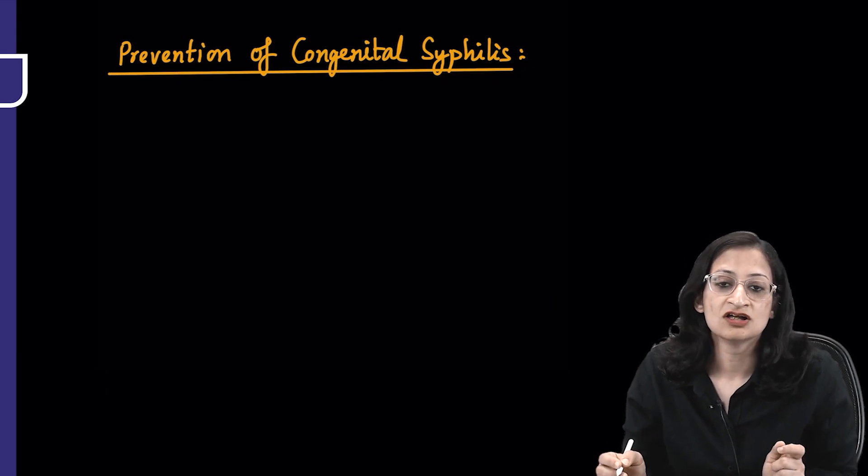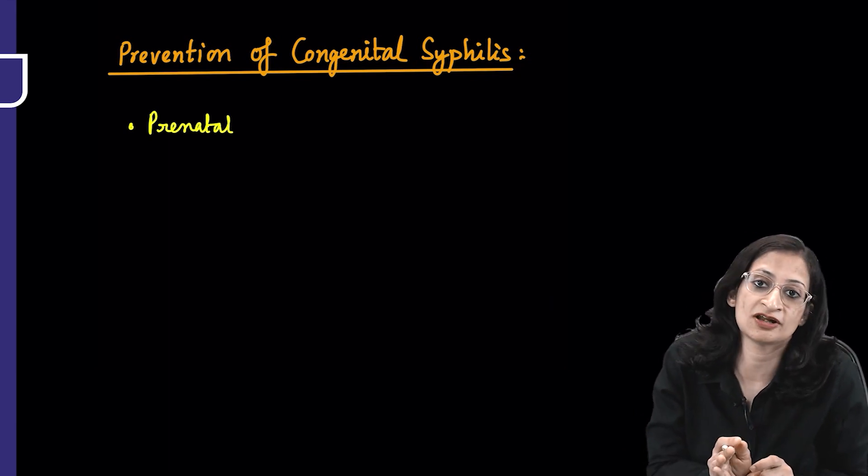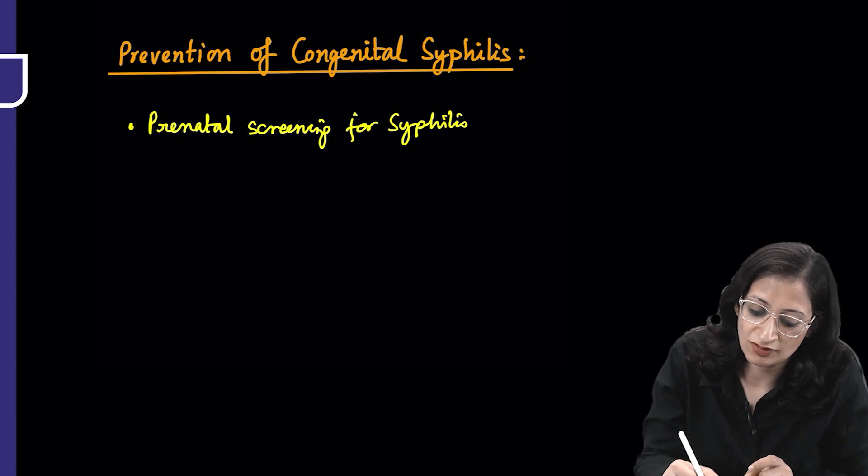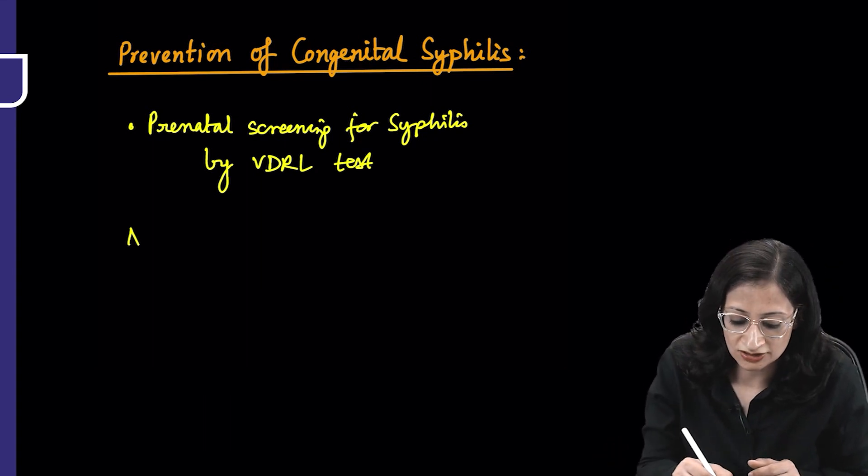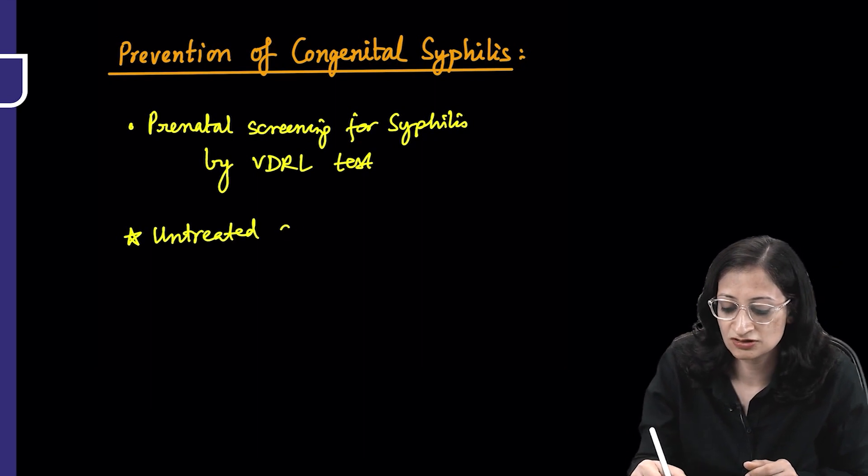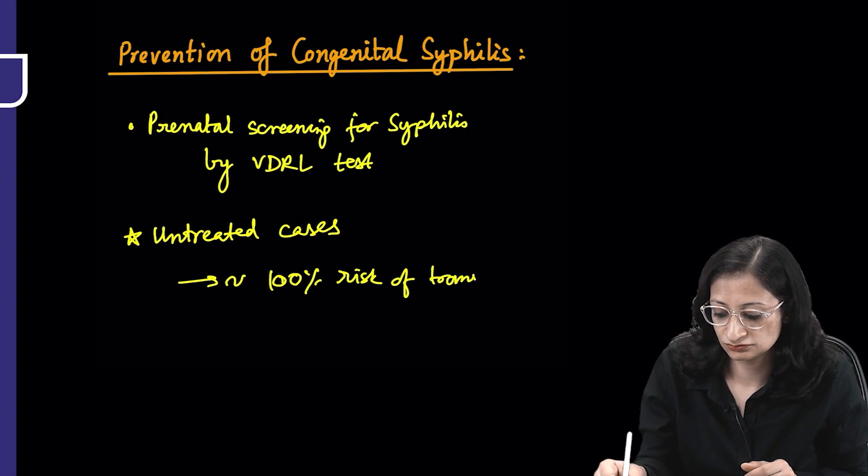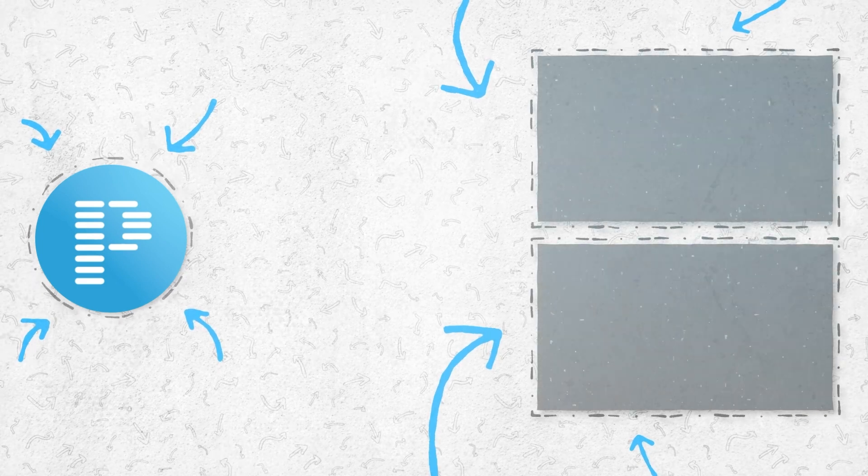Now, prevention of congenital syphilis. You have to do prenatal screening for syphilis. VDRL test must be done for every woman during pregnancy. You can do screening for the lesions as well, because in untreated cases, there is almost 100 percent risk of transmission to the baby.